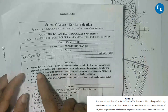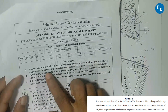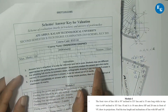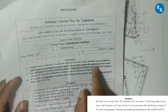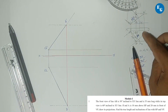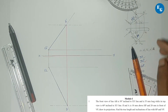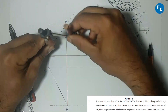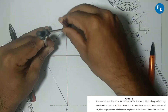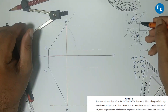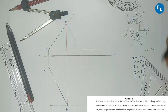Students may use different approaches for getting the correct answer, so carefully analyze the answer and award marks. Using the rotating line method: A dash B dash is rotating. This gives B2 dash.